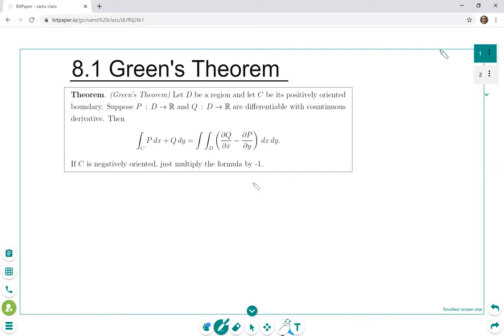So first just reading it, if we have a region, so D here is taken to be a region in R2, a planar region. And C is going to be its positively oriented boundary. So for now we're just gonna kind of ignore or neglect this positively oriented since I'll explain what that means in a second. But for now let's just look at this formula.